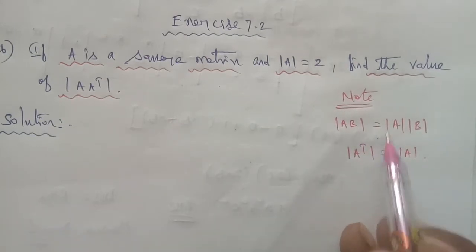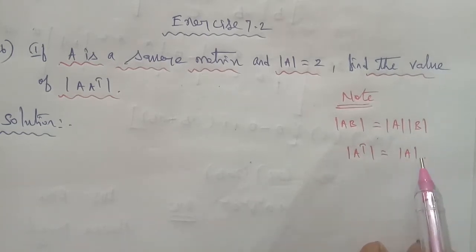The property states: determinant of AB is equal to determinant A times determinant B, and determinant A transpose is equal to determinant of A.